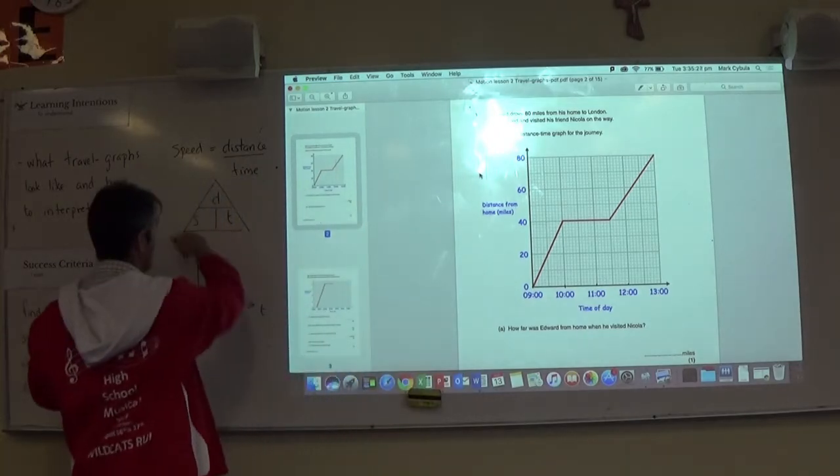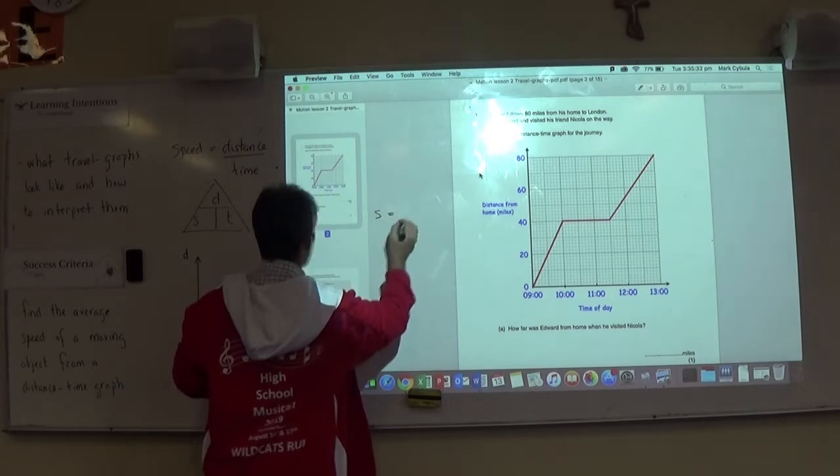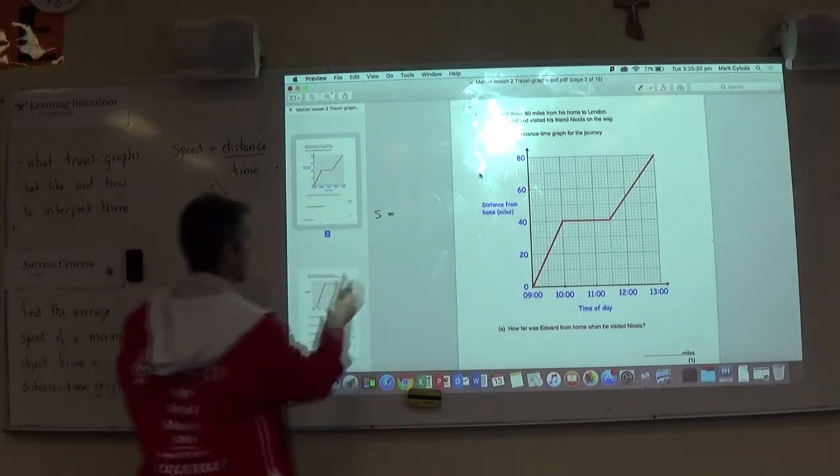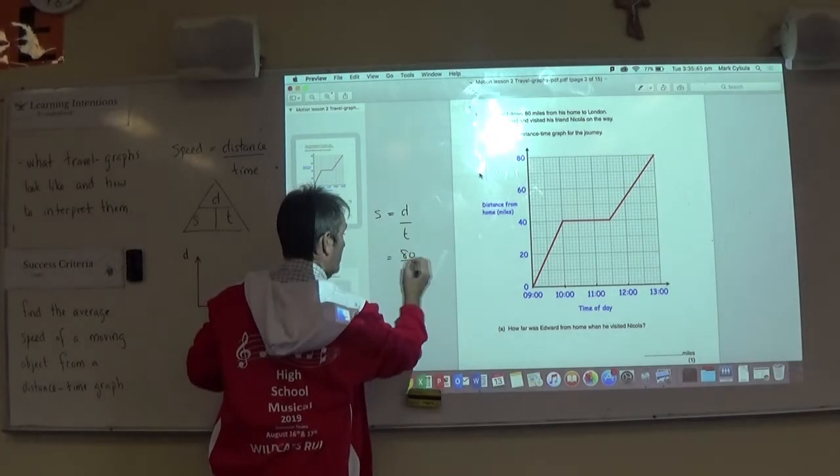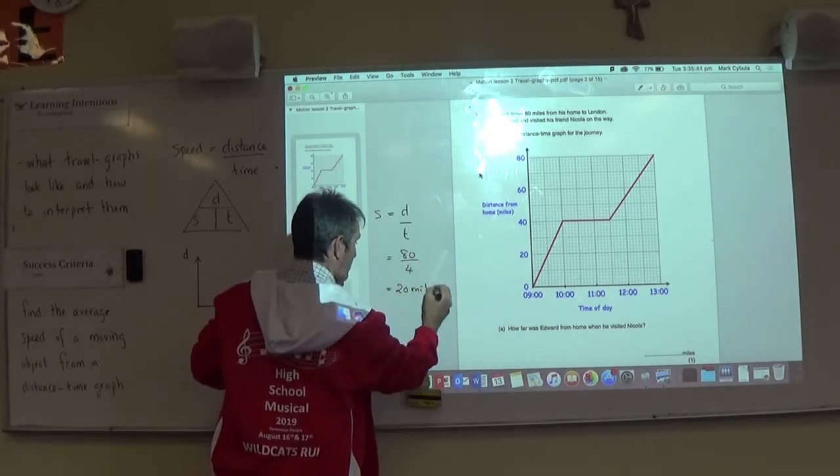As an example of the work yesterday with the speed triangle, if I needed to find the average speed using the triangle here, speed is distance divided by time. Distance divided by time, the 80 miles in four hours, an average speed of 20 miles per hour.